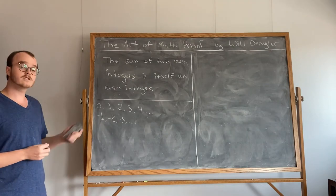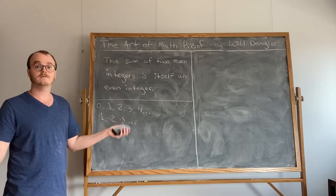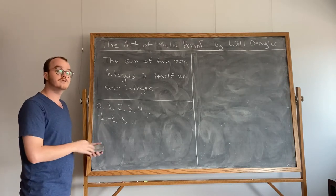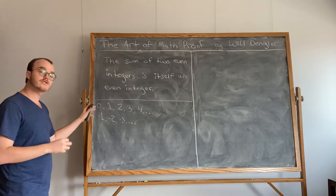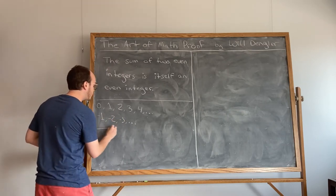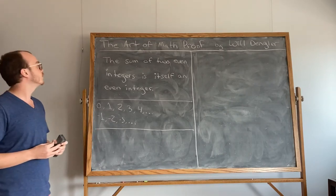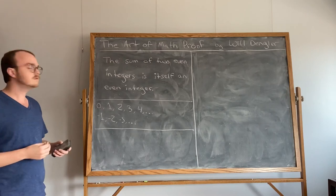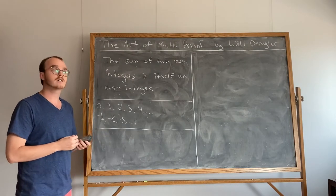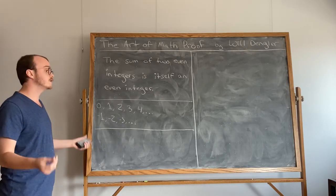We also know that we can multiply two integers together and again get another integer. We know how to do these things and we're going to take advantage of that. So, what does it mean to have an even integer value? An integer is even — there are a couple of different ways we could go about stating that. Let's just choose a definition we can all agree on: an integer is even if it's a multiple of two. Very simple. An integer is even if it's a multiple of two.